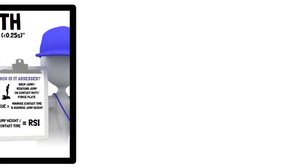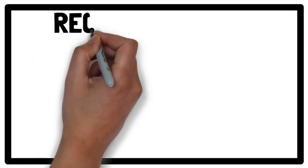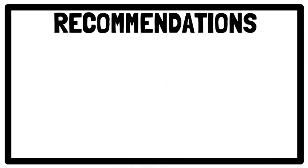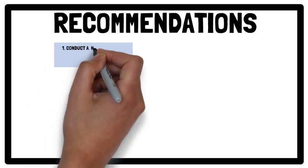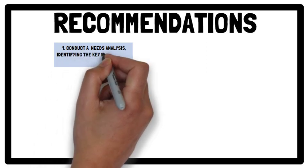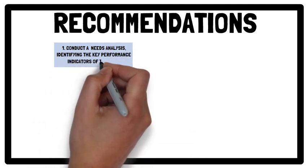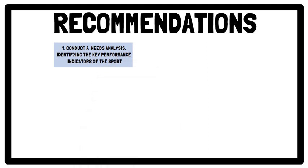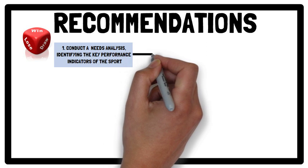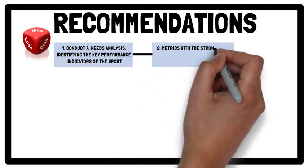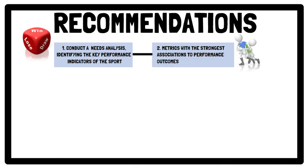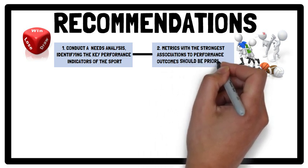To help determine what strength qualities to measure and train, we need to first conduct a thorough needs analysis, which involves identifying the key performance indicators of the sport. The performance indicators themselves must be empirically linked to competition outcomes. Once identified, metrics with the strongest associations to performance outcomes — such as tackling, striking, and many others depending on the sport — should be prioritised during strength assessment.